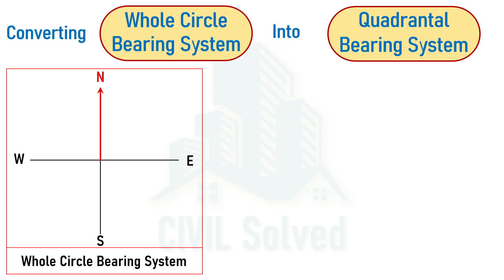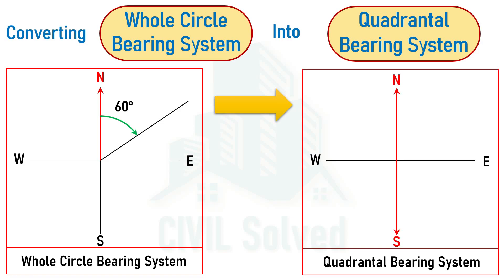Let's say we have been given a line with a bearing of 60° in the whole circle bearing system and we are asked to calculate the bearing in the quadrantal bearing system. In the quadrantal system, the angle is measured from north or south depending on the location of the line. Here the line is near to north, so the angle is measured from north and remains 60°. Since the line lies in the northeast quadrant, we write N60°E.